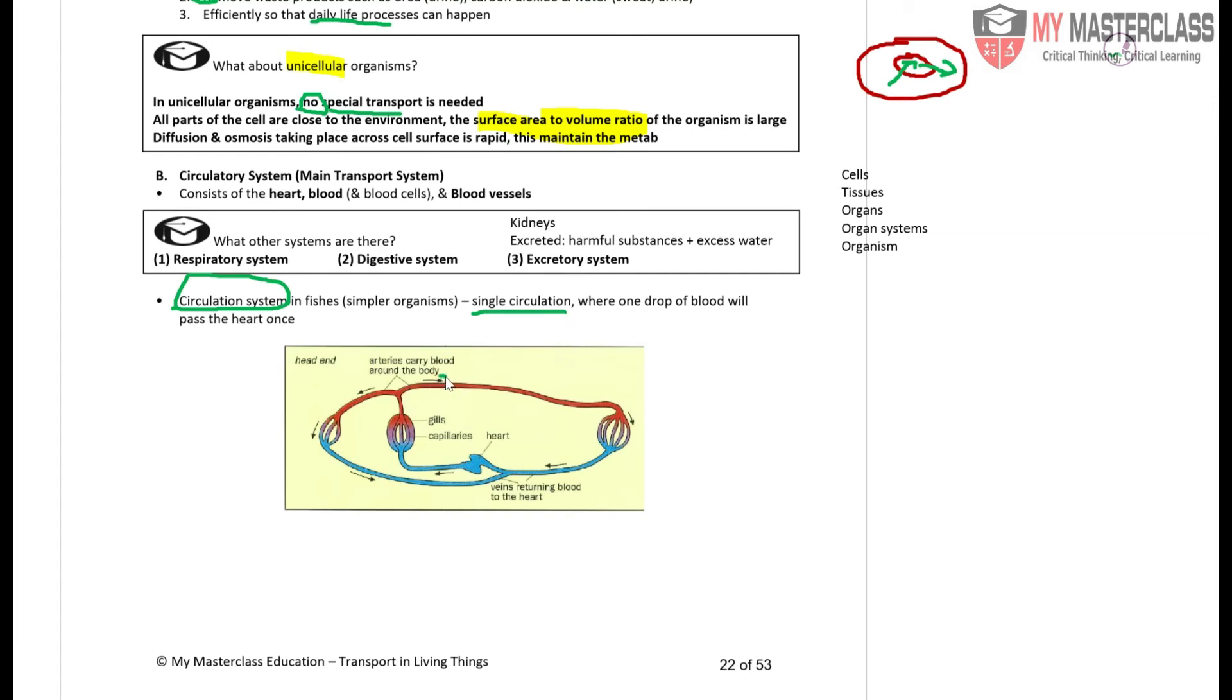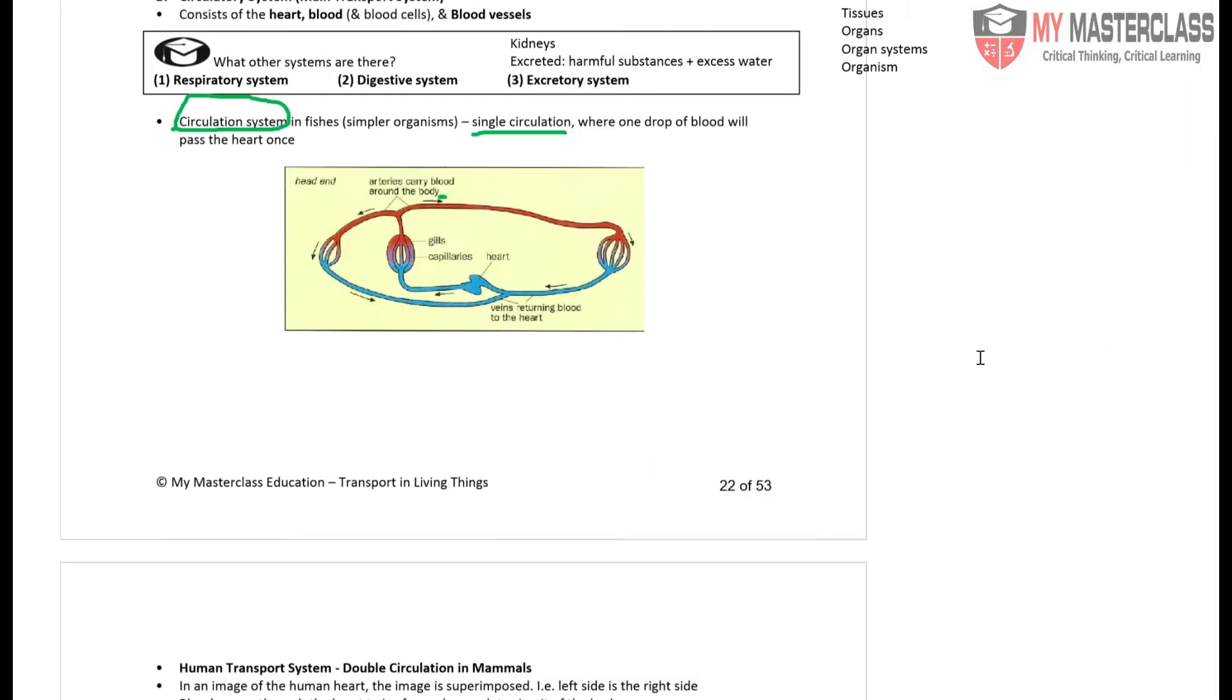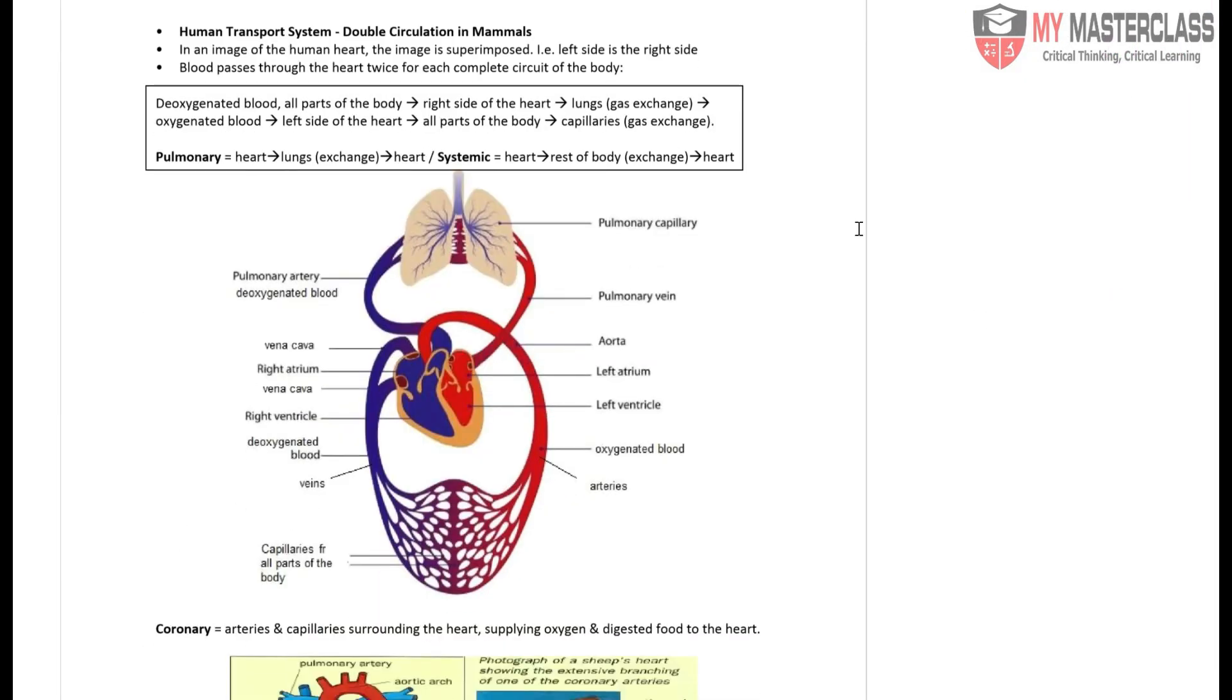Single circulation means if I have one drop of blood, this drop will go through the entire cycle and only pass back into the heart once. In humans, we have double circulation.